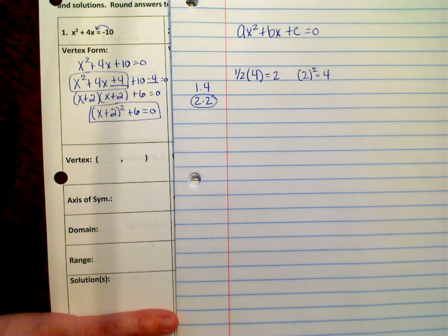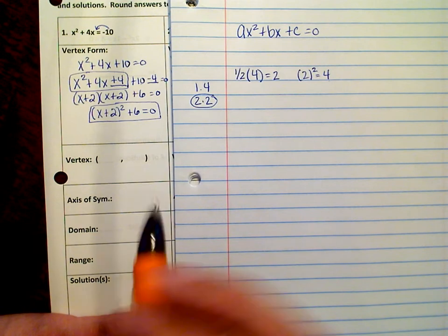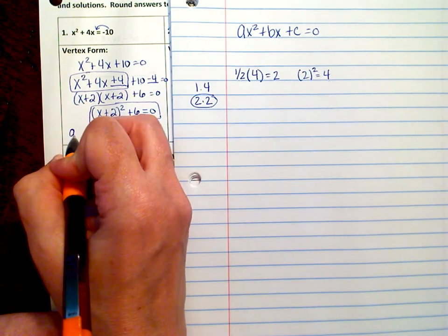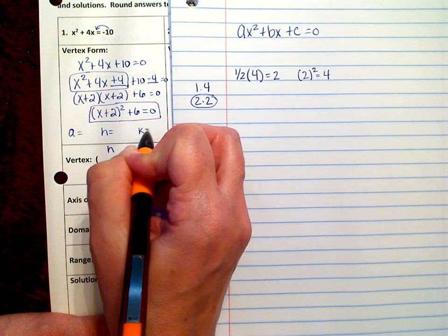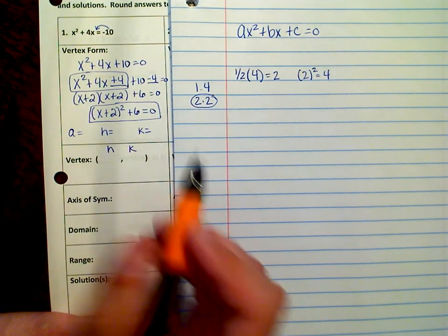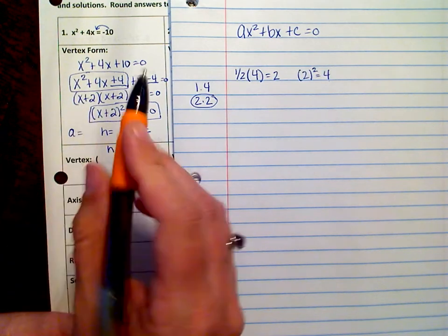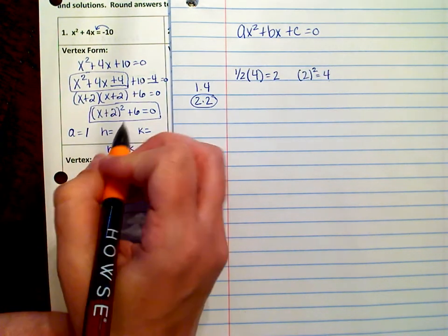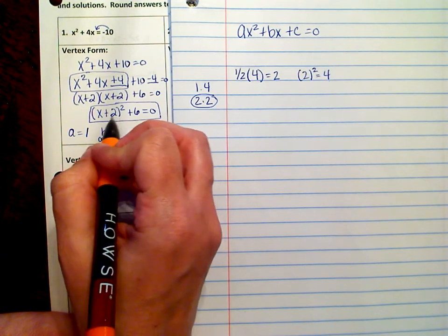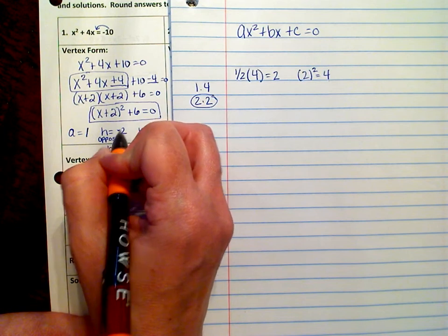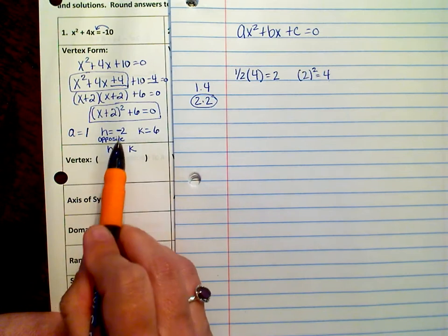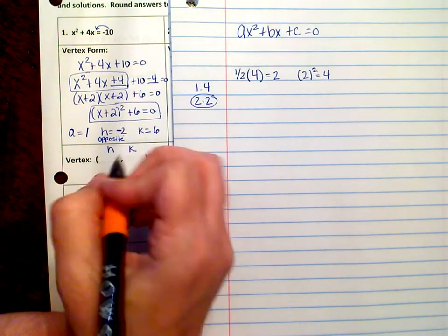Now remember, the vertex is hk. So what I would recommend that you do is figure out what a equals, h equals, and k equals. It doesn't ask for this, but on all of our quizzes and our homework, this is what we did. So remember, a is in front of the parentheses, so that's 1. h, h is the opposite. So it's the opposite of what's in the parentheses, which is negative 2, and k is 6. So the vertex is negative 2, 6. So we're going to put that here.